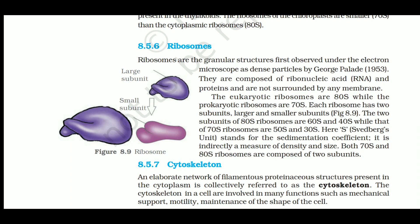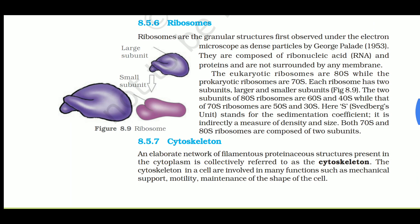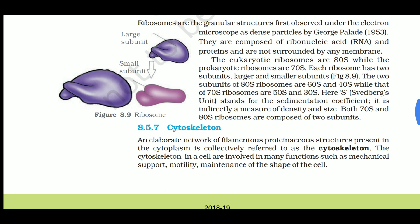Next: ribosomes. Ribosomes are granular structures first observed under the electron microscope as dense particles by George Palade in the year 1953. They are composed of ribonucleic acid (RNA) and proteins, and are not surrounded by any membrane - so ribosomes are not a membrane-bounded cell organelle.